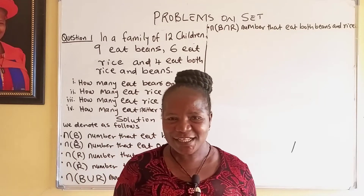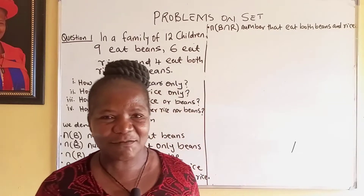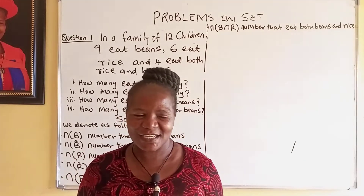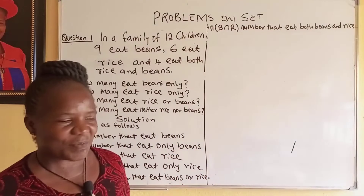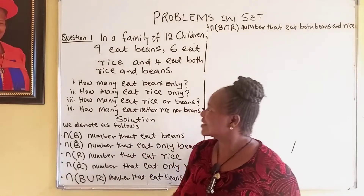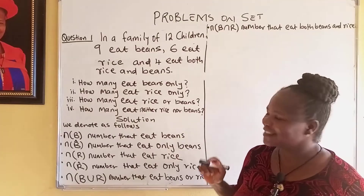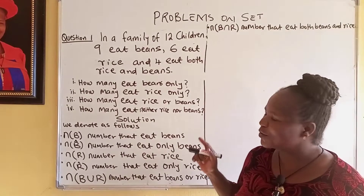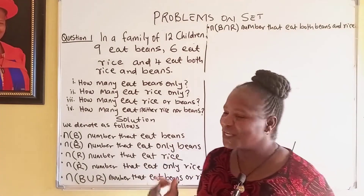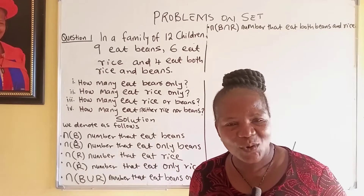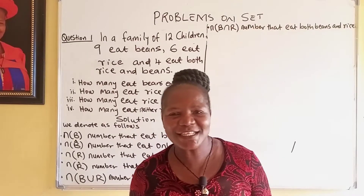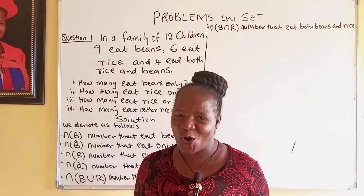So we want to look at life problems involving sets today. Let's look at the problem in the book. In a family of 12, 9 eat beans, 6 eat rice, and 4 eat both rice and beans. The questions are: How many eat beans only? How many eat rice only? How many eat beans or rice? And how many eat neither beans nor rice?